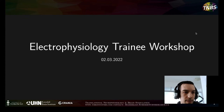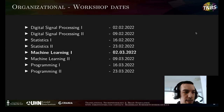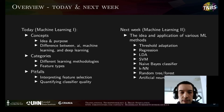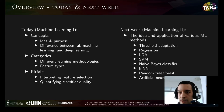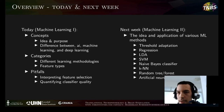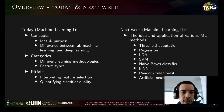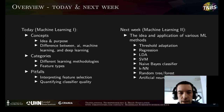Welcome to this electrophysiology training workshop. Today's topic is Machine Learning 1 and we're going to talk about a number of different concepts: the idea behind machine learning, its purpose, the difference between AI, machine learning and deep learning, different categories for learning methodologies, different feature types, and a number of pitfalls. Next week we'll cover machine learning algorithms and how to apply those on actual data.